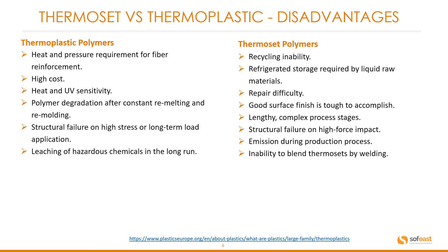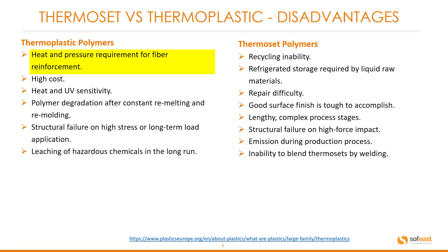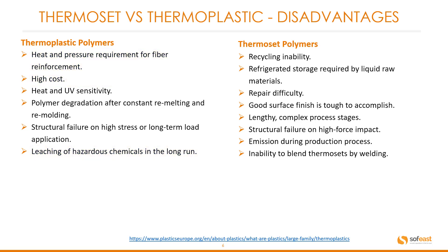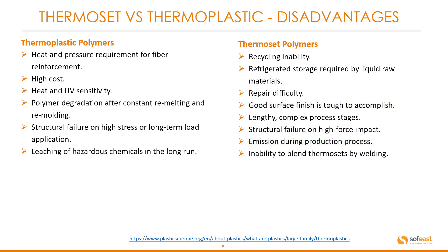Let's have a look at some of the disadvantages of each polymer type. Thermoplastic polymers require heat and pressure for fiber reinforcement, have a pretty high cost, and there is leaching of hazardous chemicals in the long run. On the thermoset side, recycling is an inability, a good surface finish is tough to accomplish, and there are emissions during the production process.